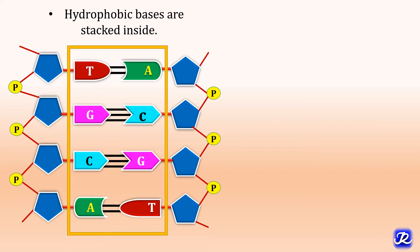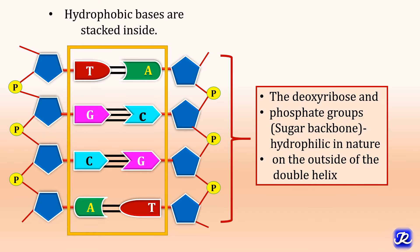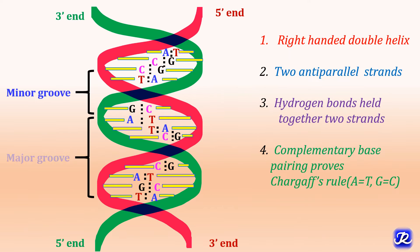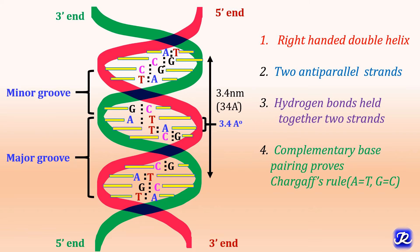In the DNA structure, because of the hydrophobic nature of nitrogenous bases, the bases are stacked inside. The deoxyribose and phosphate groups, which form the sugar-phosphate backbone, are hydrophilic in nature and are present on the outside of the double helix. The coiling of two strands creates a major groove and a minor groove on the surface of the double helix. Proteins interact with DNA at these grooves without disrupting the double helix. In the Watson-Crick model, each base pair is placed at a distance of 3.4 Ångströms, there are about 10 base pairs per complete turn of helix, so each turn is 34 Ångströms (3.4 nm), and the width of the double helix is 20 Ångströms (2 nm).